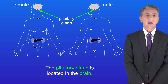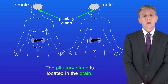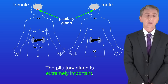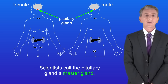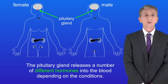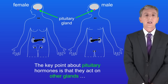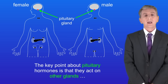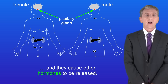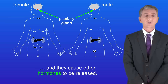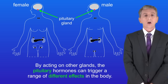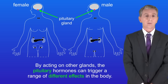The pituitary gland is located in the brain and is extremely important. In fact scientists call the pituitary gland a master gland. It releases a number of different hormones into the blood depending on the conditions. The key point about pituitary hormones is that they act on other glands and cause other hormones to be released. So by acting on other glands, the pituitary hormones can trigger a range of different effects in the body.